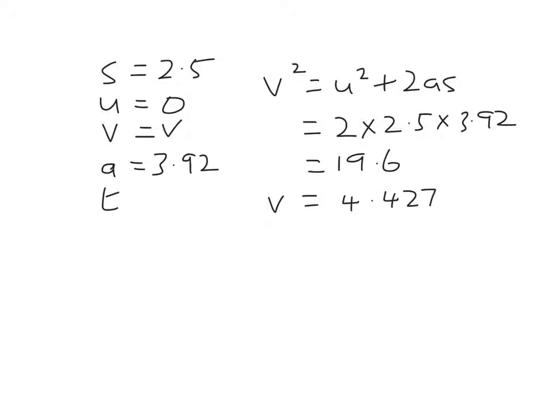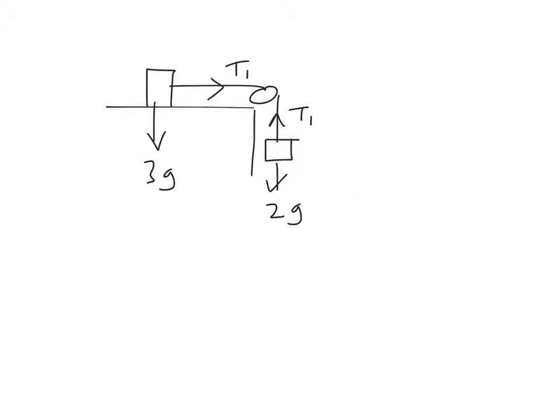Then we've got friction. So the diagram sort of looks the same, I've called it t1 because it's not the same as t in the previous question. The normal reaction here is obviously 3g, and so the frictional force opposing motion is 0.75 times 3g, and that works out to be 22.05. So in case you're not sure, that's mu times r. Mu is 0.75 times 3g, works out to be 22.05.